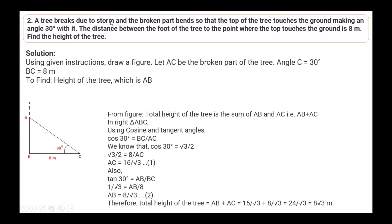Question 2: A tree breaks due to a storm and the broken part bends so that the top of the tree touches the ground making an angle of 30 degrees with it. The distance between the foot of the tree to the point where the top touches the ground is 8 meters. Find the height of the tree. Let AC be the broken part of the tree, angle C is 30°, BC is 8 meters. Total height of the tree is AB plus AC.